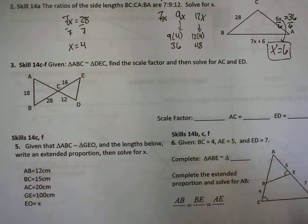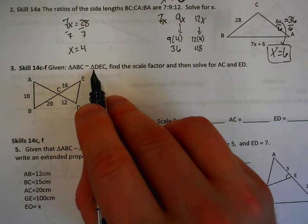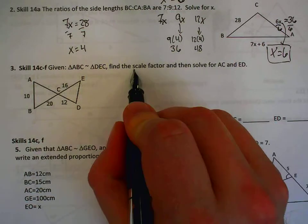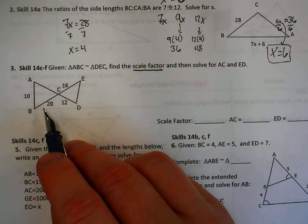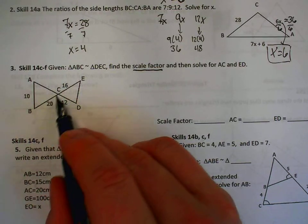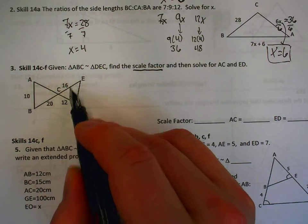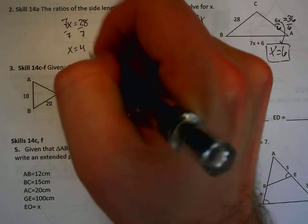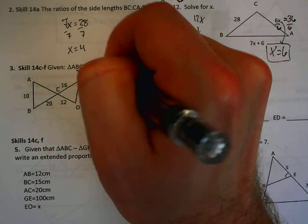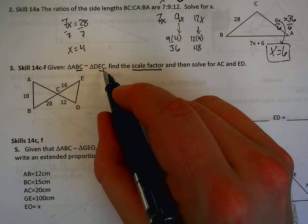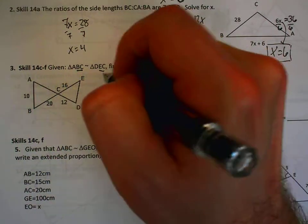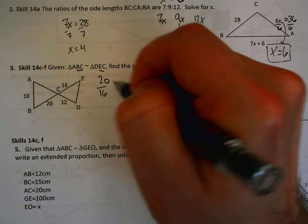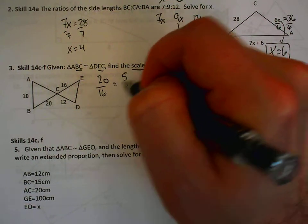Number 3. Given triangle ABC is similar to triangle DEC, find the scale factor, and then solve for AC and ED. In order to find the scale factor, we need to find two corresponding parts where we actually know the value. Now, I know that BC is going to correspond to one of these two from the second triangle, but I'm not sure which. So I'm going to look at the similarity statement and find BC, which are the last two letters, and the last two letters over here are EC. So that means that BC and EC are the corresponding parts, and I have 20 over 16 as my scale factor. Reduced by a factor of 4, and that would give me 5 fourths.